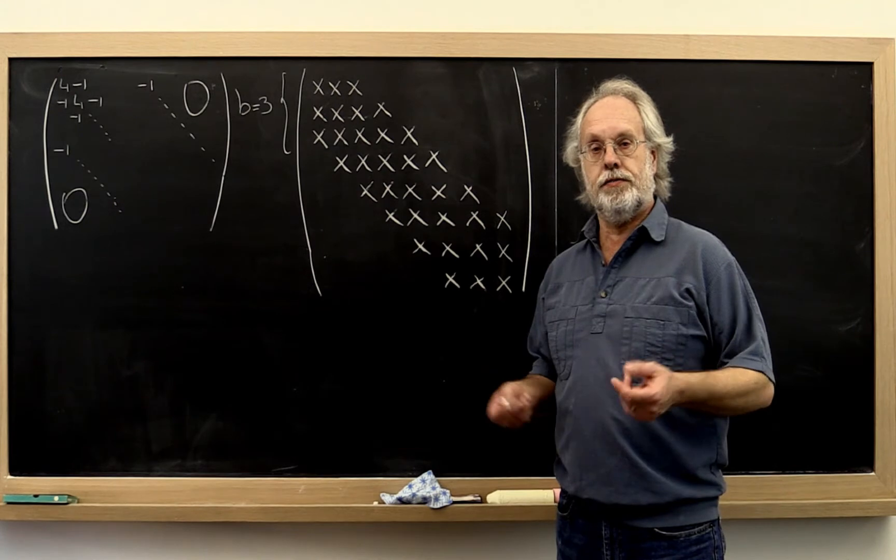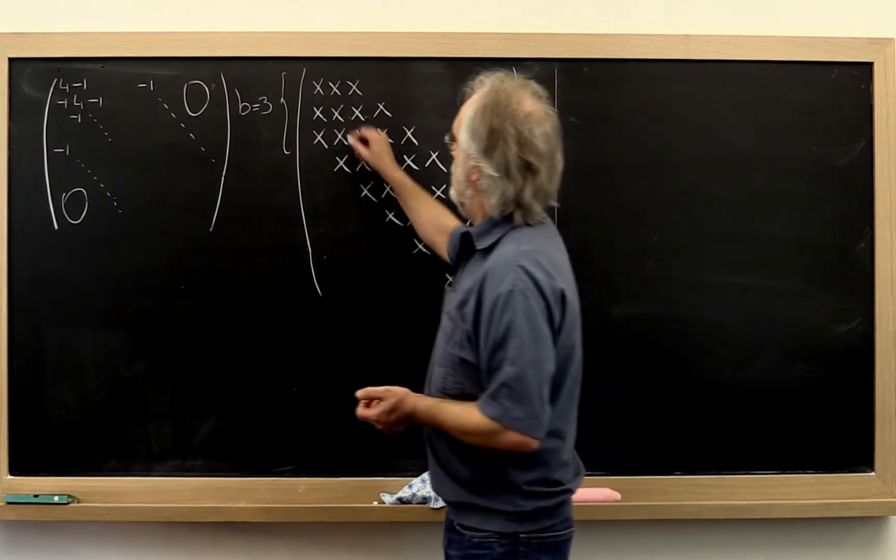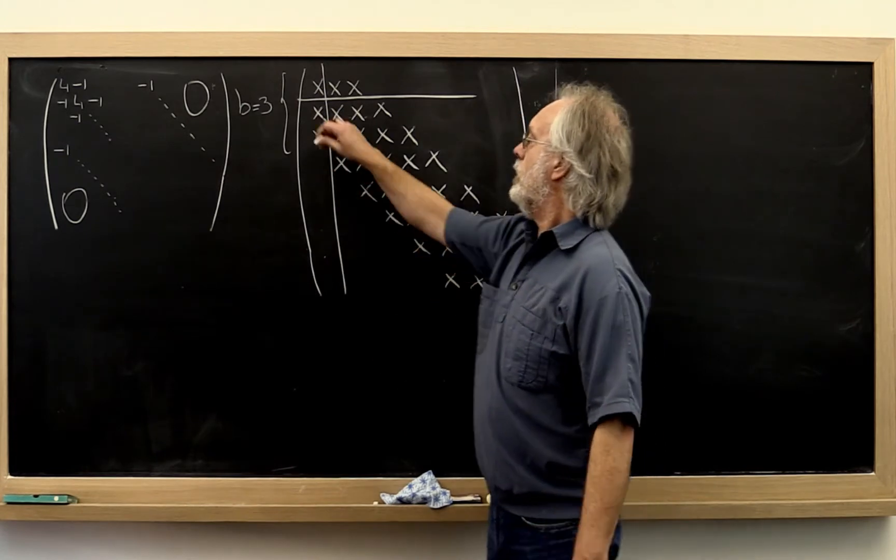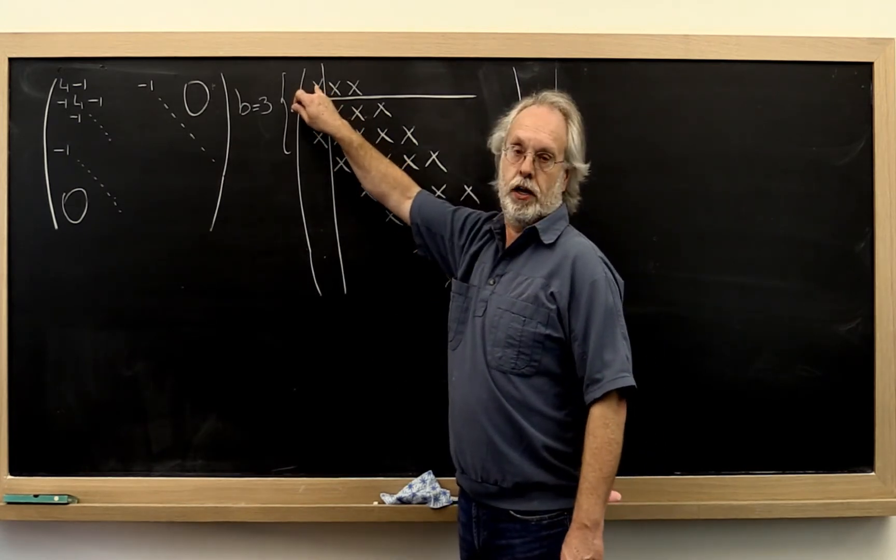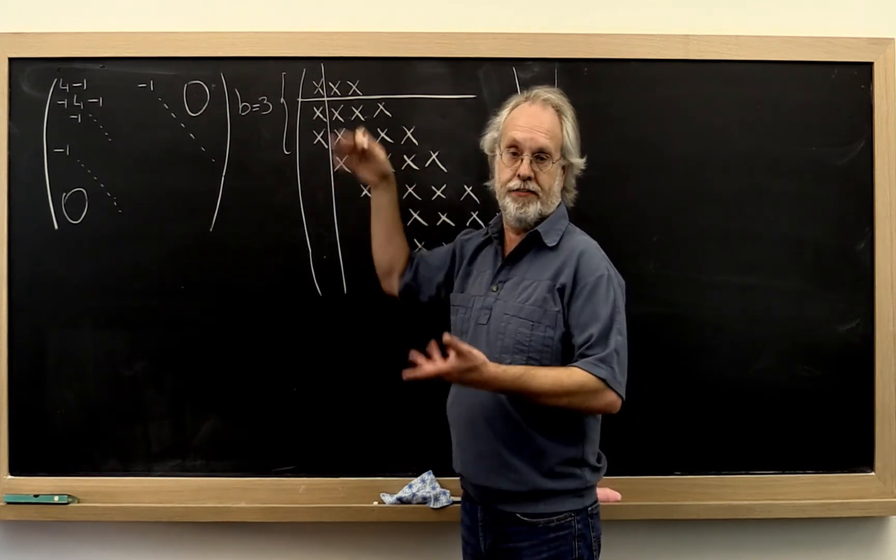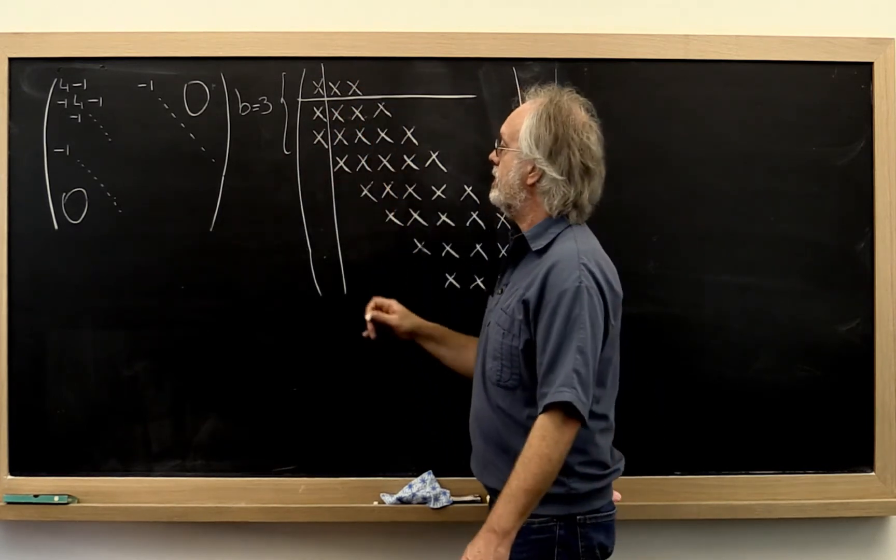So let's analyze what the cost of such an algorithm would be. We partition like this. And in the current step we would take a square root, the cost of which we're going to ignore because we're going to assume that the bandwidth is big enough that the cost of the square root isn't significant.